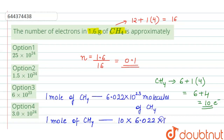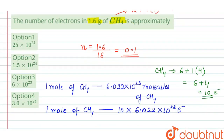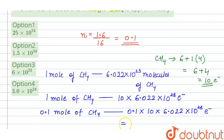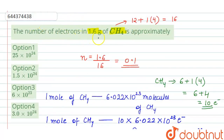Now we calculate for 0.1 mole, which corresponds to 1.6 grams of CH₄. So 0.1 mole of CH₄ has 0.1 × 10 × 6.022 × 10²³ electrons. Solving this, we get 6.022 × 10²³ electrons.